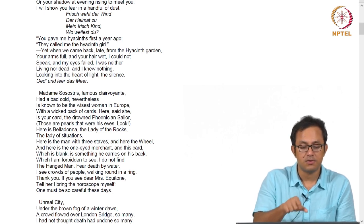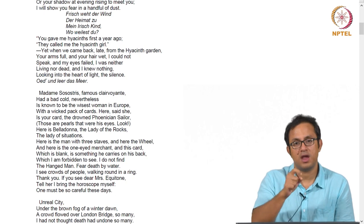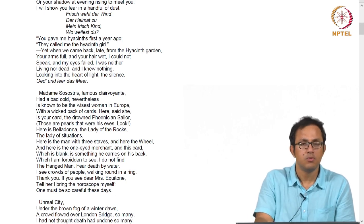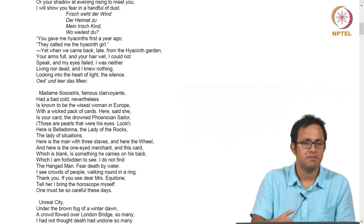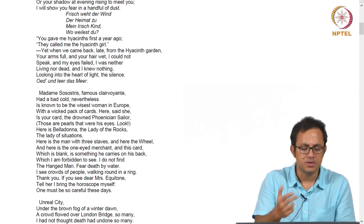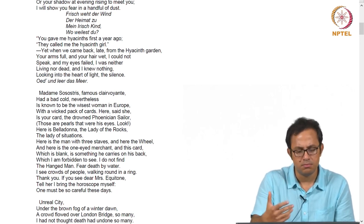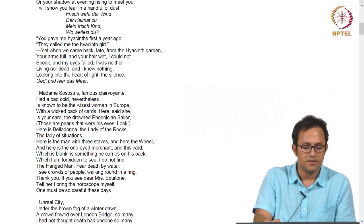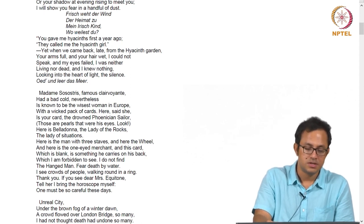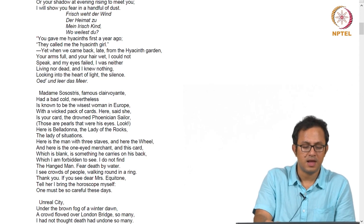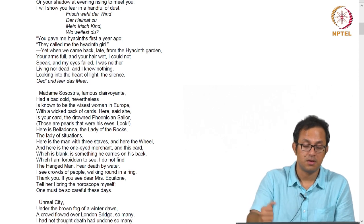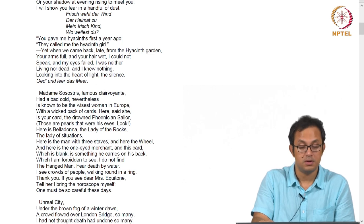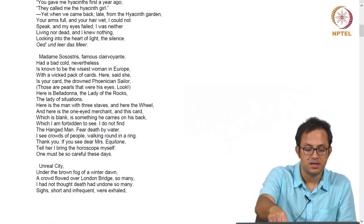Then there is reference to crowds of people walking around in a ring — indicating no forward movement, no mobility in the proper sense. It actually indicates stagnation. There is a massive crowd of people, but all they do is walk around in a ring; there is no forward movement. And then the reference to Mrs. Equitone is a very allegorical and symbolic name. The speaker is said to convey to Mrs. Equitone that Madame Sosostris will bring the horoscope herself — 'One must be so careful these days.'